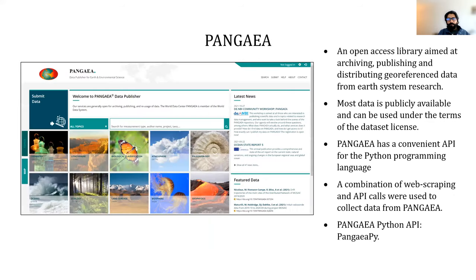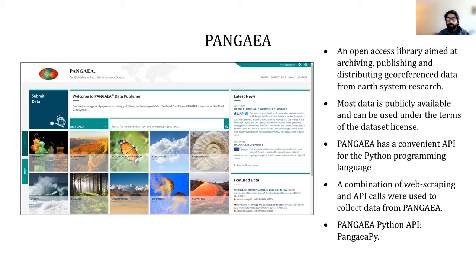For our ocean mapping project, we collected a lot of images from different sources. One of the larger sources was Pangea, which is an open access library aimed at archiving, publishing, and distributing geo-referenced data from earth system research. You can search for different types of data on Pangea and collect datasets — most of it is publicly available under Creative Commons licenses. Pangea also provides a convenient Python API, which we used in the Pangea Downloader program, which searches, filters, and retrieves relevant datasets from Pangea.